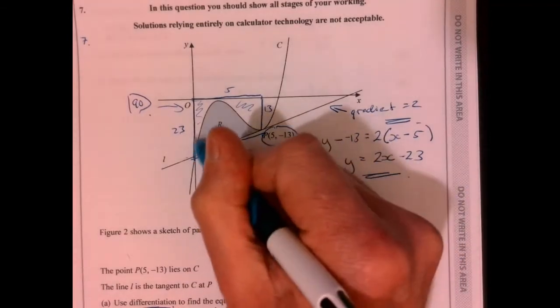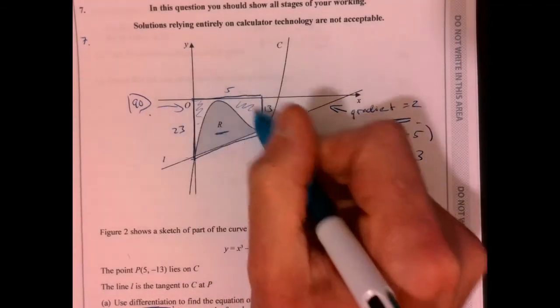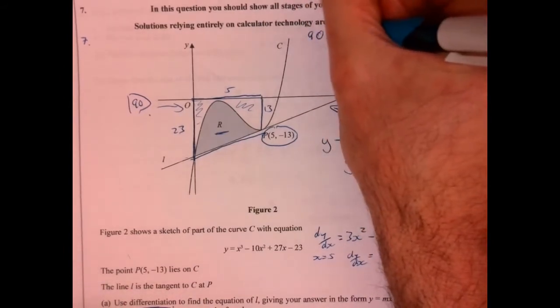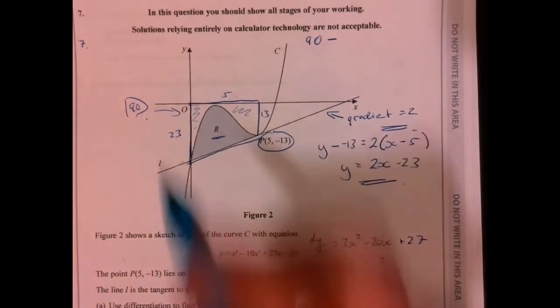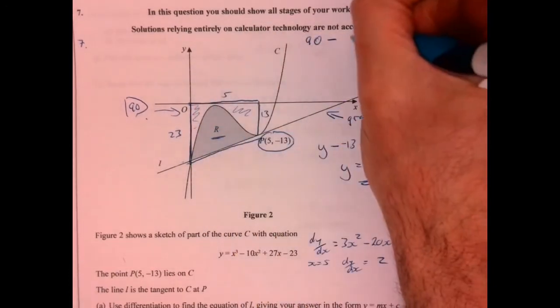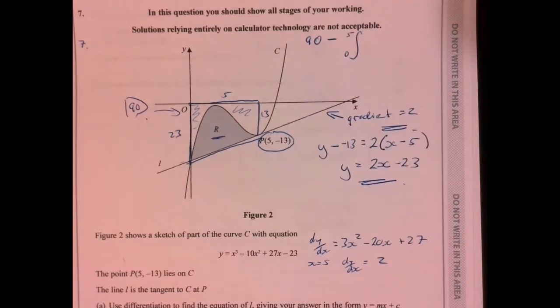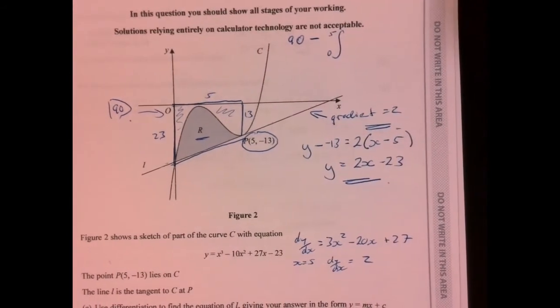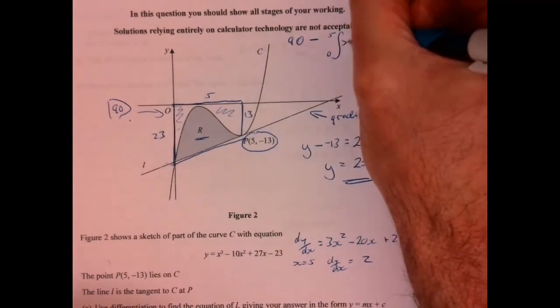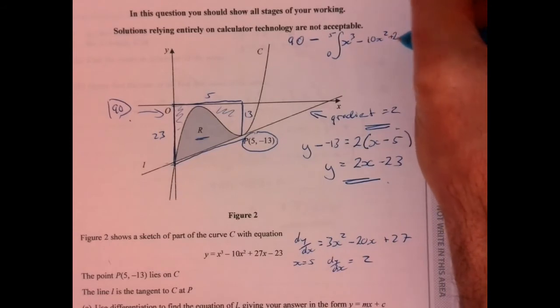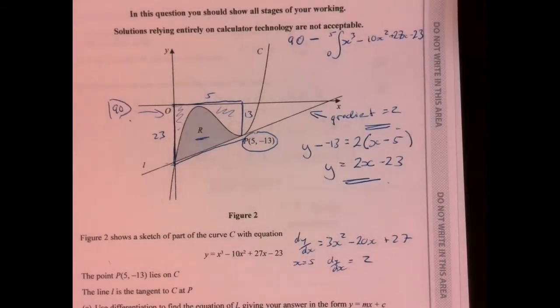So we now need to work out this section in here. So remember, our answer is going to be 90 and then take away this part here. So that's going to be, we're going to integrate the limits of 5, 0 and then put our function in x cubed minus 10x squared plus 27x minus 23.